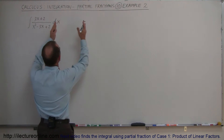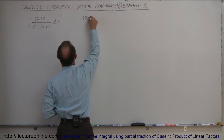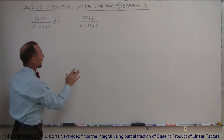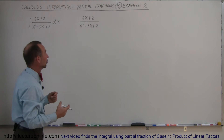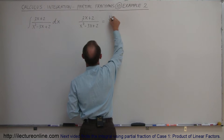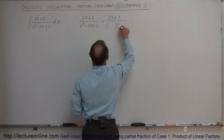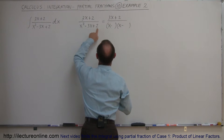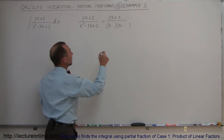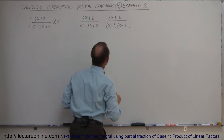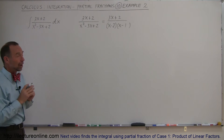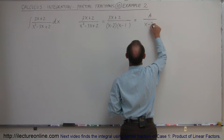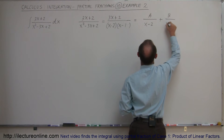What we're going to do is take the integrand and write it as 3x plus 2 divided by x squared minus 3x plus 2. First, we want to factor the denominator so we can write it as a sum of fractions. We need an x and an x, with both minus signs. Two numbers that multiply to give positive 2 and add to give negative 3 — the obvious choice is negative 2 and negative 1. Now that we have the denominator factored, we can write it as the sum of two fractions: A over x minus 2 plus B over x minus 1.